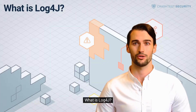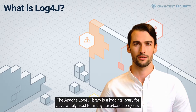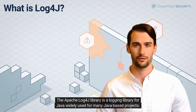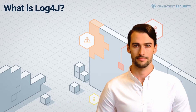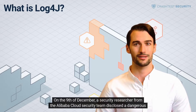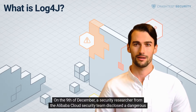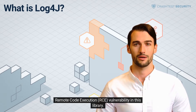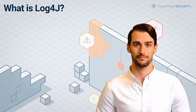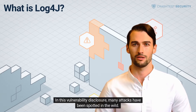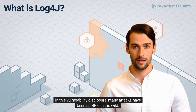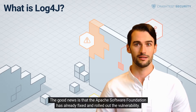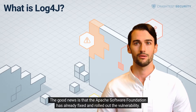What is Log4j? The Apache Log4j library is a logging library for Java, widely used for many Java-based projects. On the 9th of December, a security researcher from the Alibaba Cloud security team disclosed a dangerous remote code execution vulnerability in this library. Many attacks have been spotted in the wild, but the good news is that the Apache Software Foundation has already fixed and rolled out a patch for the vulnerability.